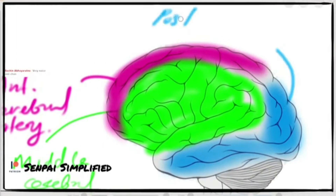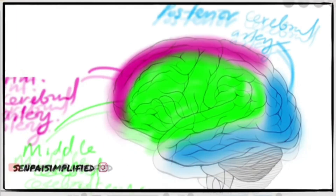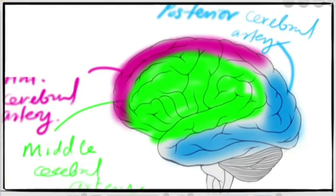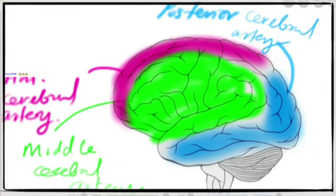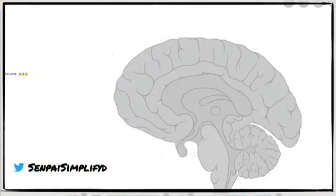Let me also look at the posterior cerebral artery's territory by taking a look at the sagittal section of the brain, where you can see the internal blood supply. You're currently seeing almost a superficial view of the brain, so let me get to a sagittal section so you can appreciate the blood supply there. This is a sagittal section of the brain.